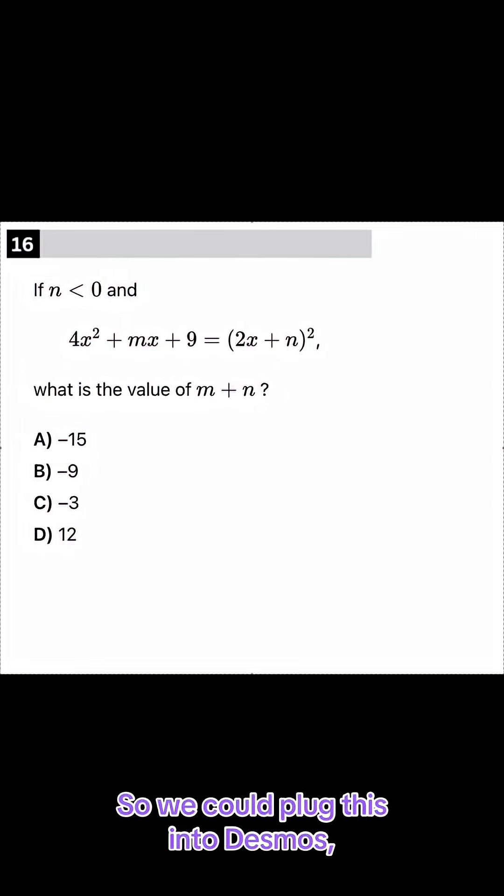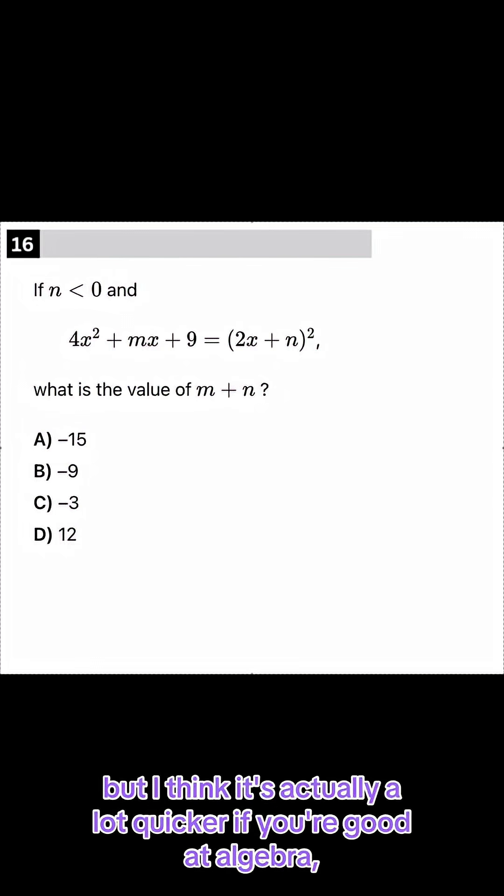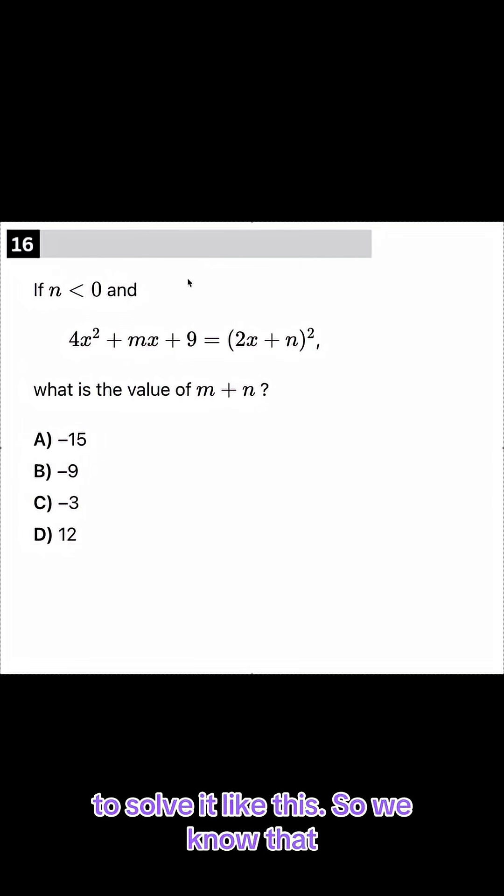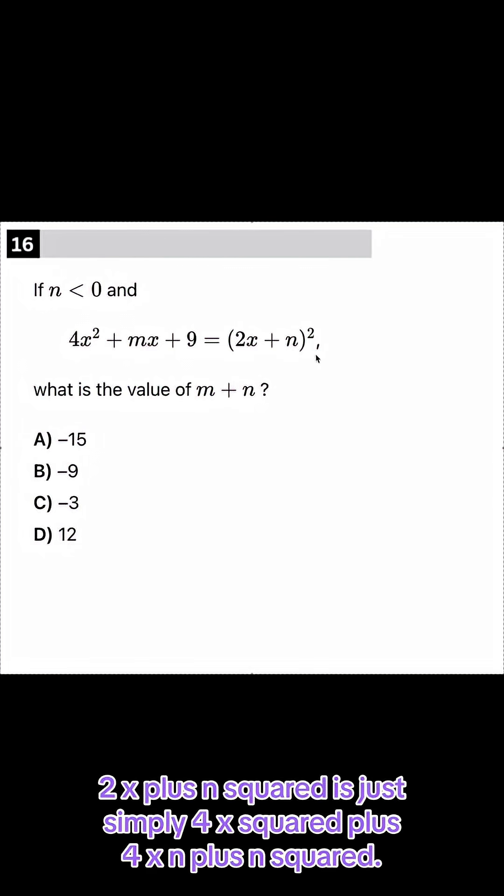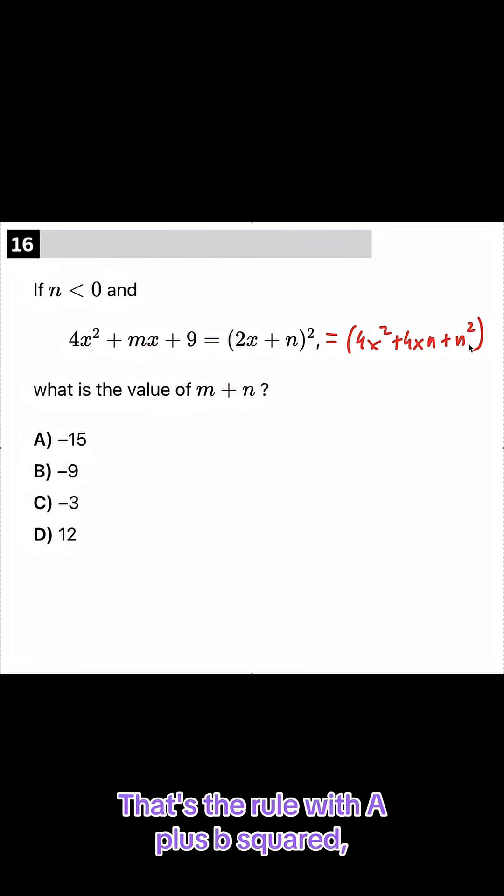So we could plug this into Desmos, but I think it's actually a lot quicker if you're good at algebra to solve it like this. We know that 2x plus n squared is just simply 4x² plus 4xn plus n². That's the rule with a plus b squared.